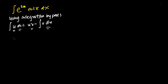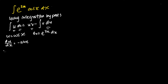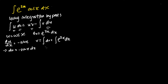For this particular problem, I would let u be equal to cosine x. And my dv equals to e to the power of 2x dx. Then I will find my du by differentiating u, and I will get negative sine x, so du is equals to negative sine x dx. To get v, I will integrate dv, which means integrating e to the power of 2x dx, and I will get half e to the power of 2x.